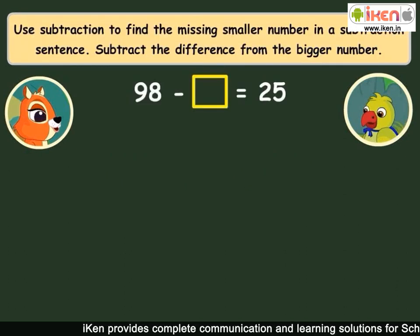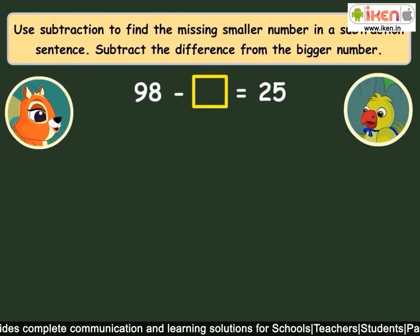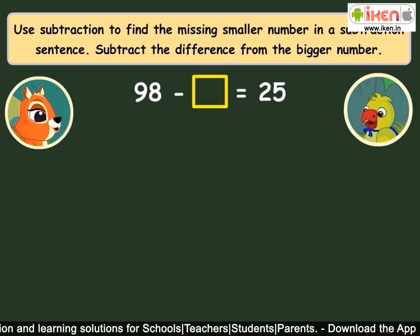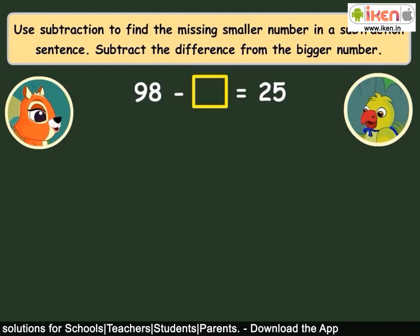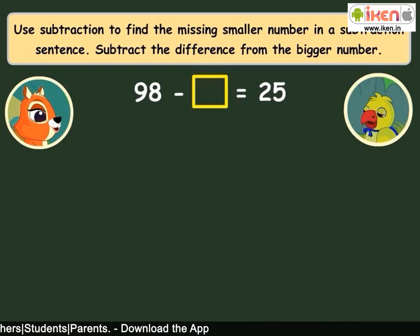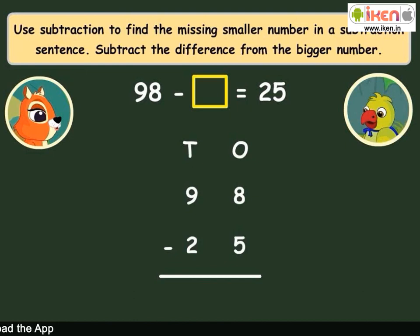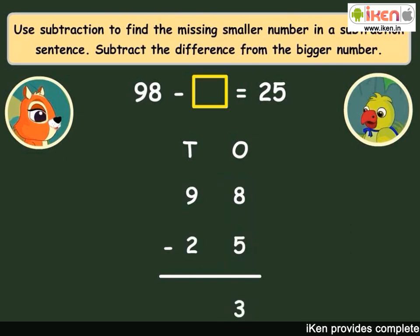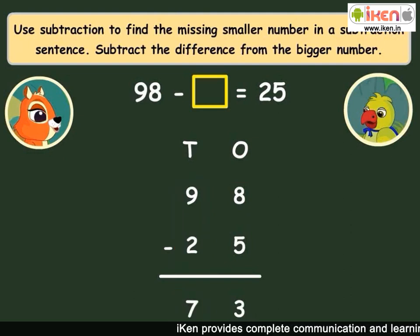Here is a subtraction statement with a missing number. You can see that the smaller number is missing. We use subtraction to find the missing smaller number — we subtract the difference from the bigger number. Can you try, Amber? Yes! We need to subtract 25 from 98. 8 minus 5 is 3, and 9 minus 2 is 7, so the missing number is 73.